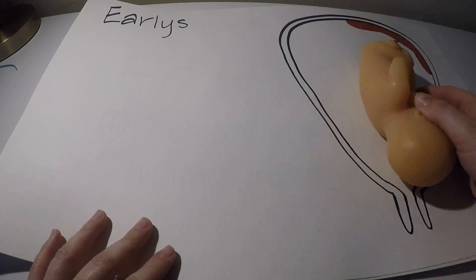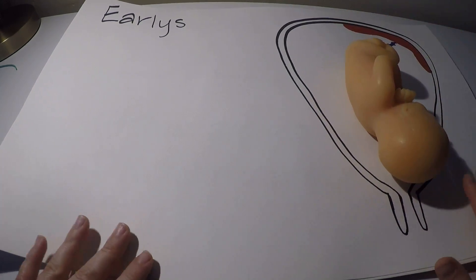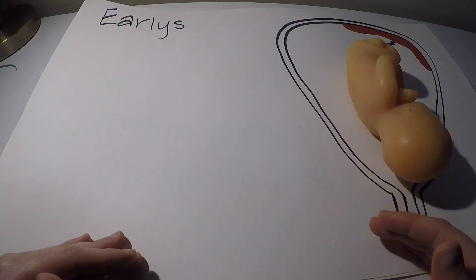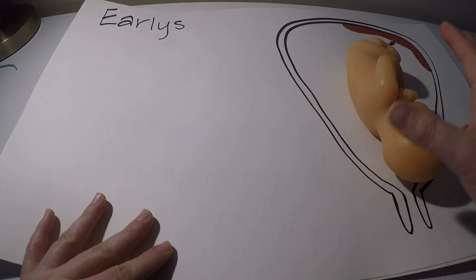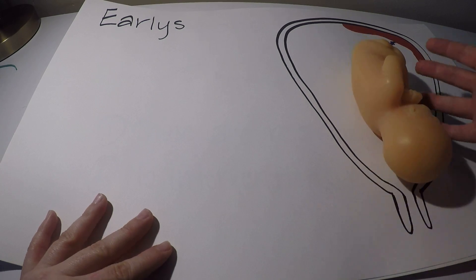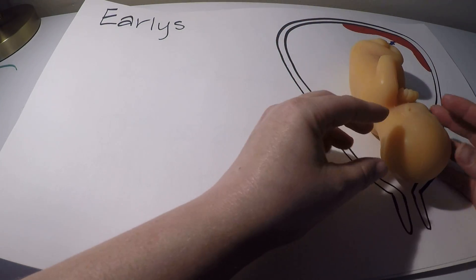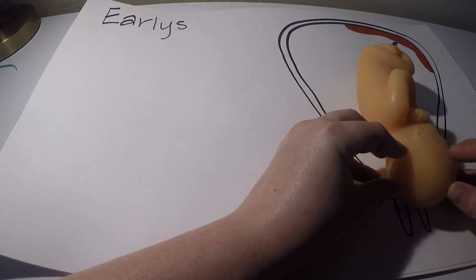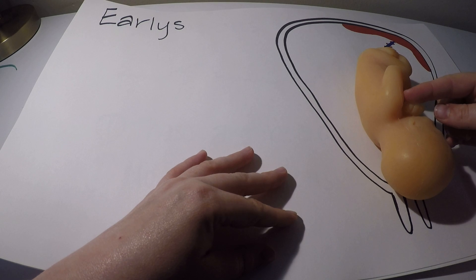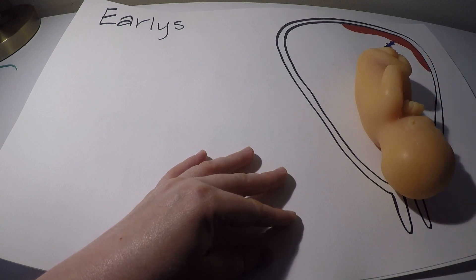The next deceleration we're going to talk about are earlies. I'm going to put baby back over here. Early decelerations are due to fetal head compression. These decelerations really are nothing to worry about. I always think of it as like a baby vagal response. So as the fetus is pushed further into the birth canal, as that head gets pushed down here, the head is going to be compressed. When that head is compressed, that causes a reaction in the fetus that causes the heart rate to slow down.